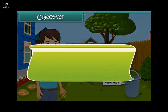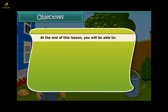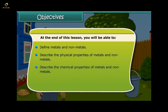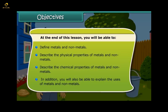Objectives: Friends, at the end of this lesson you'll be able to define metals and non-metals. You will also be able to understand the physical properties of metals and non-metals. Besides that, you will be able to describe chemical properties of metals and non-metals, and in addition you will also be able to explain the uses of metals and non-metals.